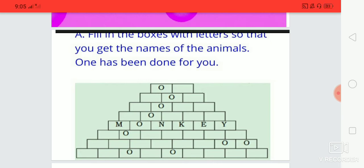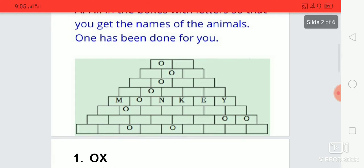In the first row, first box, you can write ox, ox. Write down after O, write down X. So we got the name of the animal, that is ox. Like that, we can write in the second row. What we can write? Think.